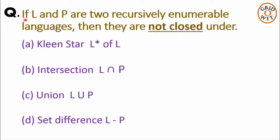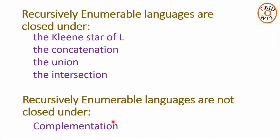The question is: if L and P are two recursively enumerable languages, then they are not closed under which of the following options? The options given are: first, Kleene closure; second, intersection; third, union; and fourth, set difference.